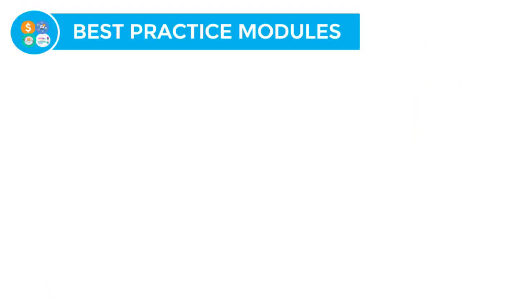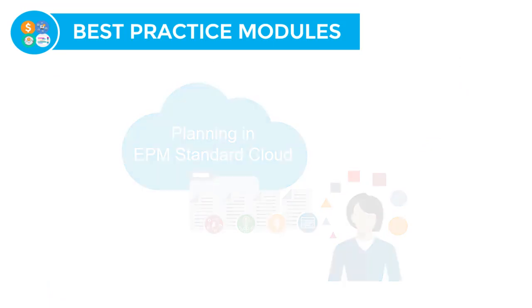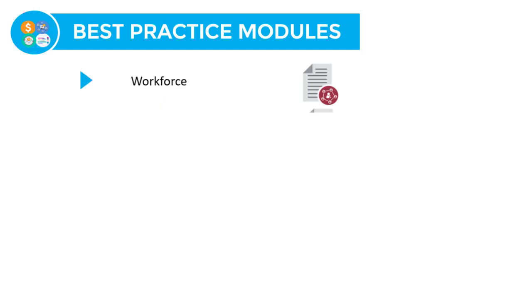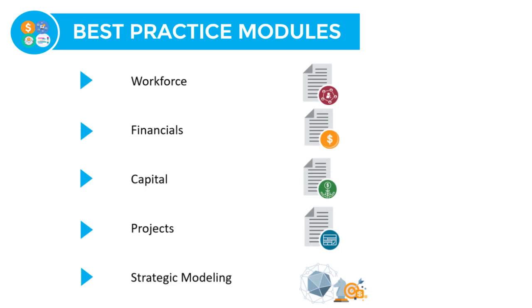The following best practice modules are included in the standard version of the planning business process: Workforce, Financials, Capital, Projects, and Strategic Modeling. All modules come with pre-built drivers, dashboards, and KPIs.